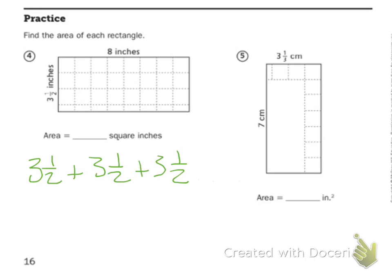I'm not going to write it all, so then I would end up with twenty-four and then I would have eight halves. So two goes into eight four times, so I know I'm going to have to do twenty-four plus four, which equals twenty-eight square inches.